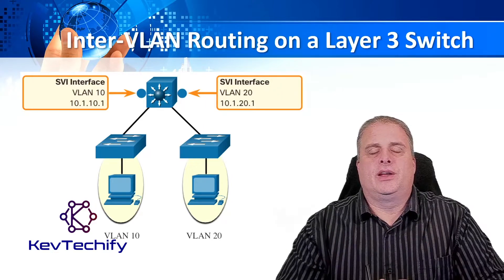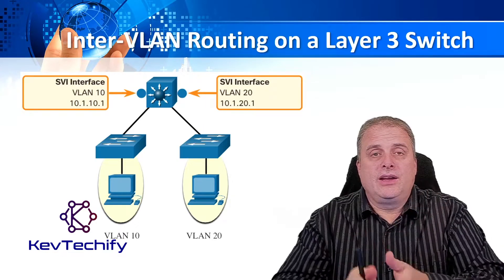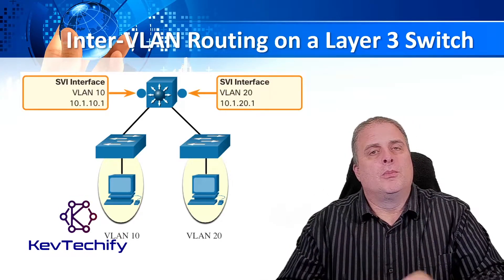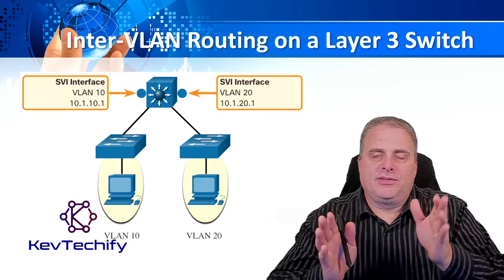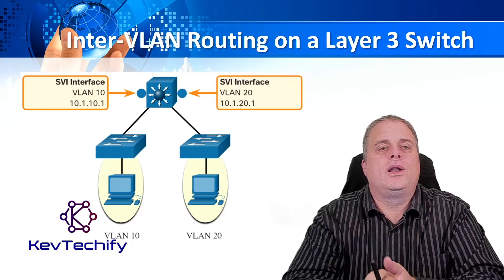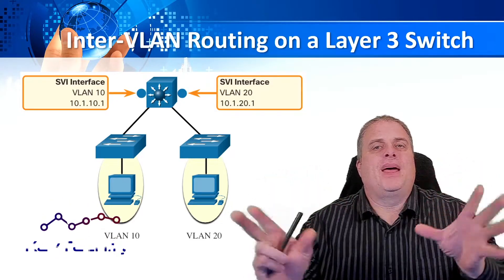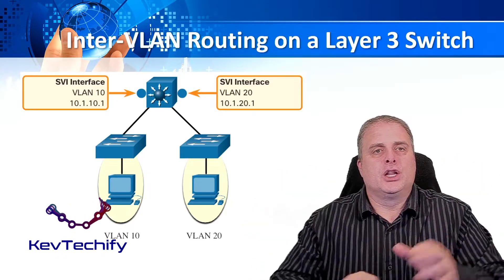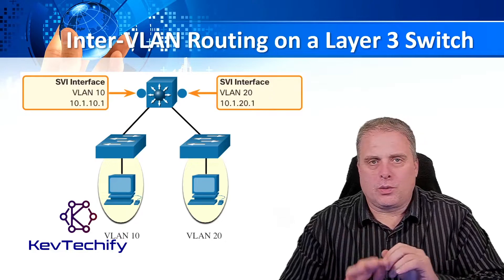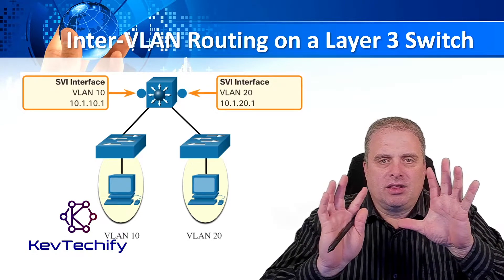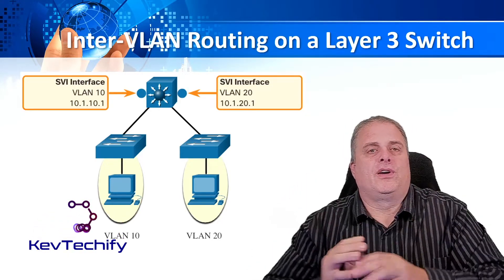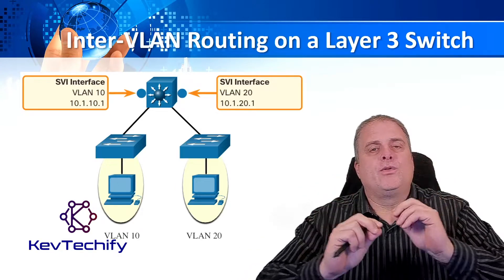The third option for inter-VLAN routing is using a Layer 3 switch. A Layer 3 switch is a special switch — typically when we talk about switches they're Layer 2, but a Layer 3 switch combines the functionality of a Layer 2 switch with a Layer 3 router, putting them into one unit. We get the best of both worlds. It looks like a normal switch with all the ports on the front, but inside the operating system you have both Layer 2 switch functionality and Layer 3 router functionality built in, so you only have one device to manage.